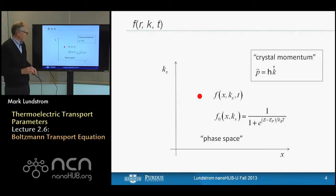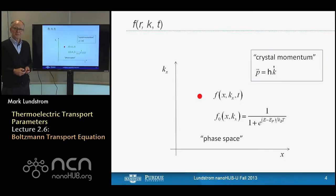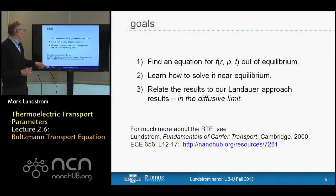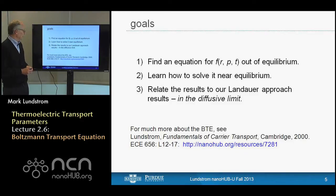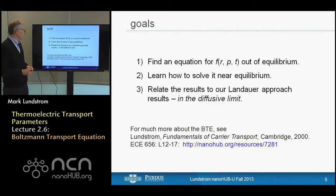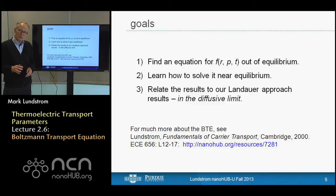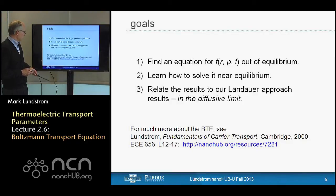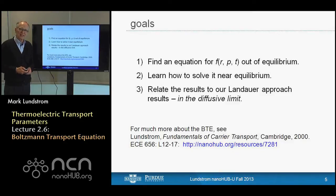Phase space is just a name we give to position and momentum space — or instead of momentum, we might label it as k-space, where k is the wave vector of an electron wave. The crystal momentum is written as p equals h-bar k, so I'll equivalently talk about wave vector or momentum, and I always mean crystal momentum. In this two-dimensional phase space, a particle is located at some position and some momentum.